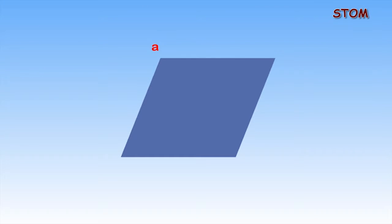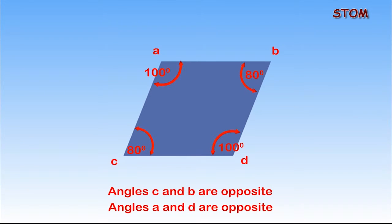For example, this parallelogram shape has angles A, B, C and D. Angle B and C are opposite angles, while angle A and D are also opposite to each other.